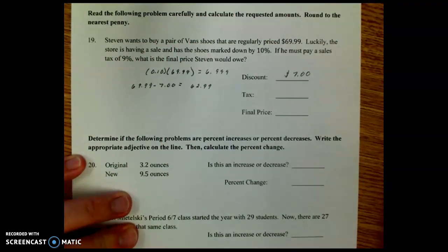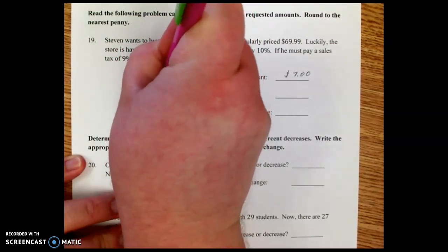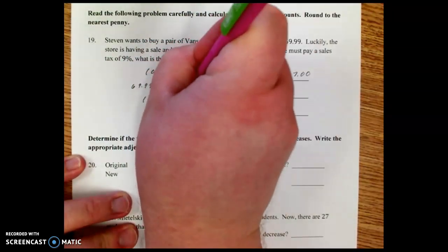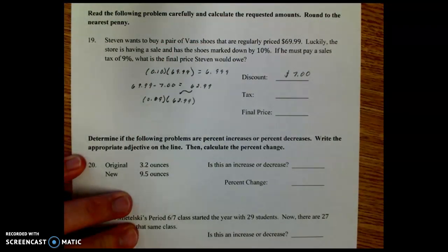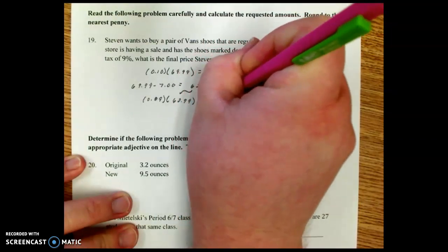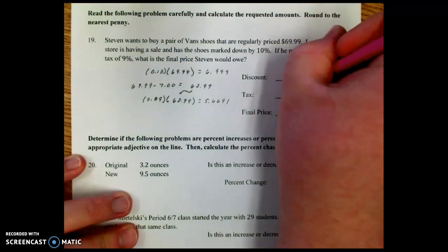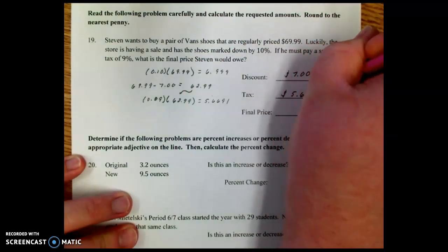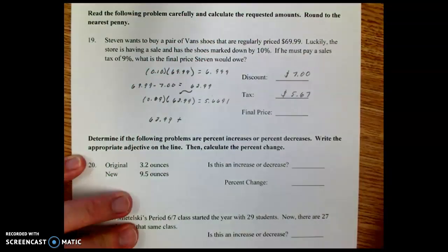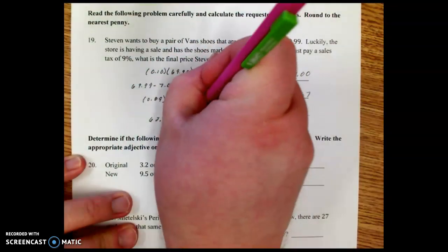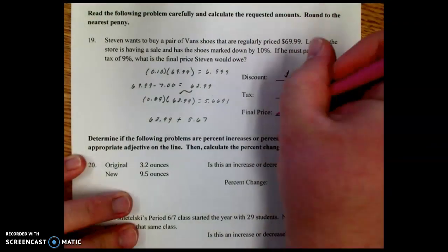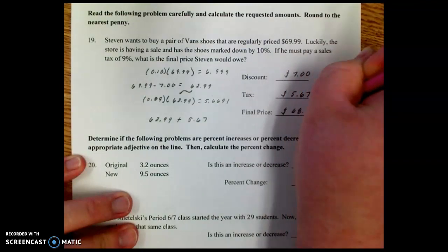That's the amount that we need to figure out the tax on. So if it's a 9% tax, we're going to do 0.09 times that new price of $62.99. And when we do that, we get $5.6691. So that means the tax is going to round to $5.67. So the final price would end up being the $62.99 as the discounted price plus the tax of $5.67. So we do $62.99 plus $5.67. Final price of those shoes would be $68.66.